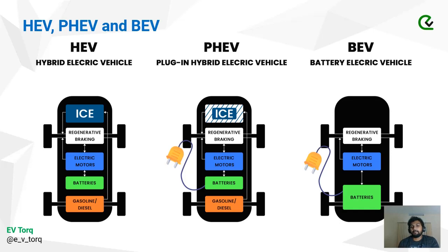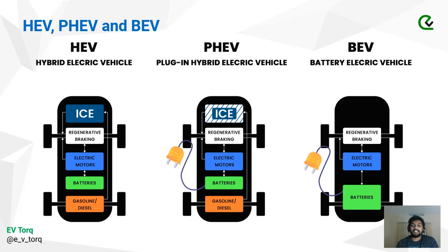Then come BEVs — battery electric vehicles which run fully on battery, and that is what we focus on. In the next slide, we will explain the block diagram of an electric vehicle and cover all the components that go into a fully electric vehicle. As of now, you can see there is a drivetrain, an electric motor, and a rechargeable battery. Examples of BEVs include Tesla, MG Hector fully electric, Hyundai Kona, and Tata Nexon.